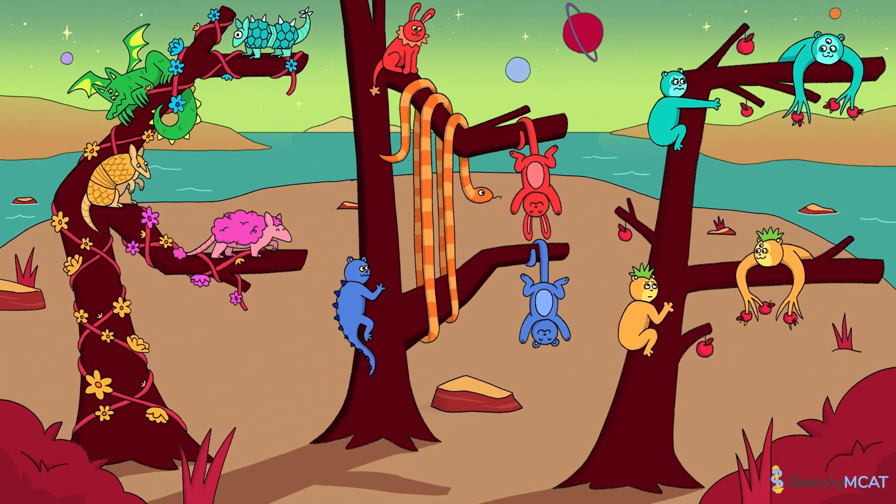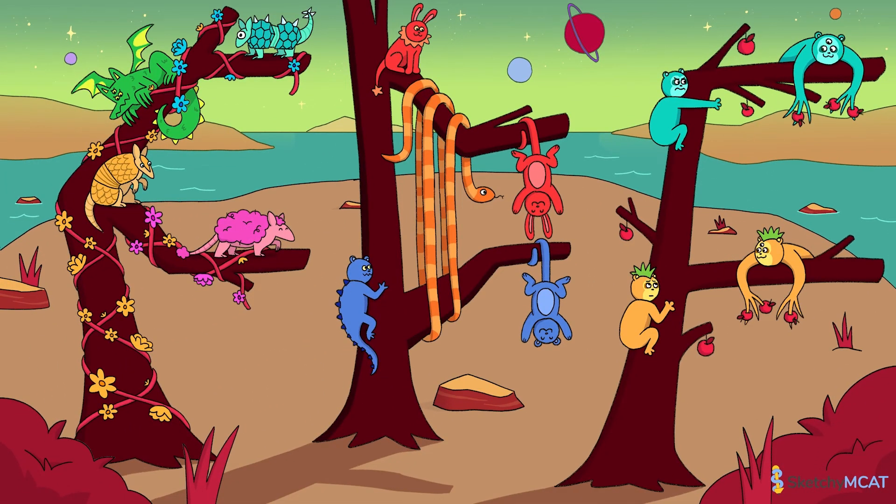Well, there you have it, the three major patterns of evolution. To sum it up, over many generations, the phenotypes of different species can become more different or more similar, depending on what selection pressures each species faces.